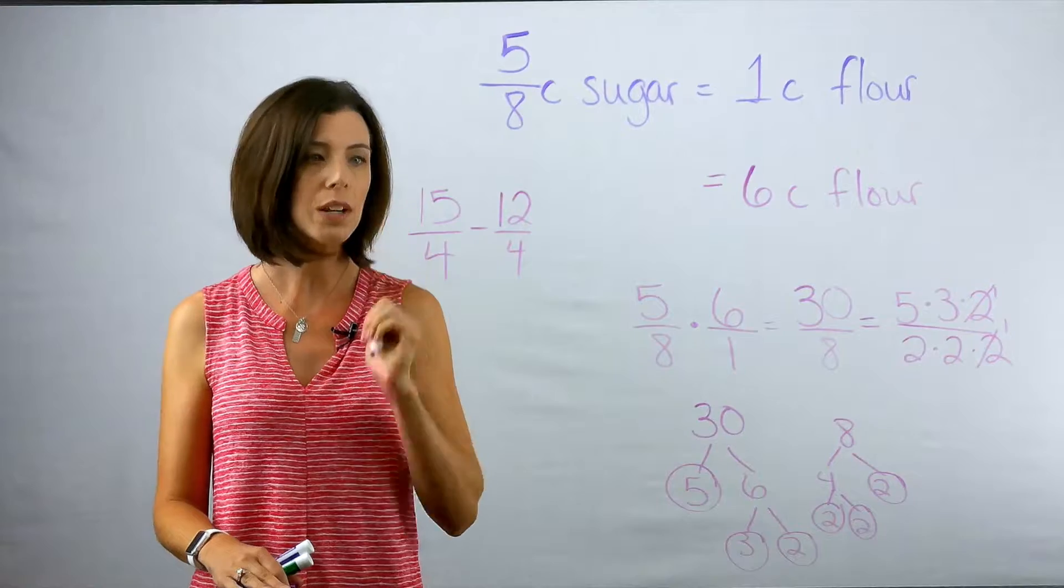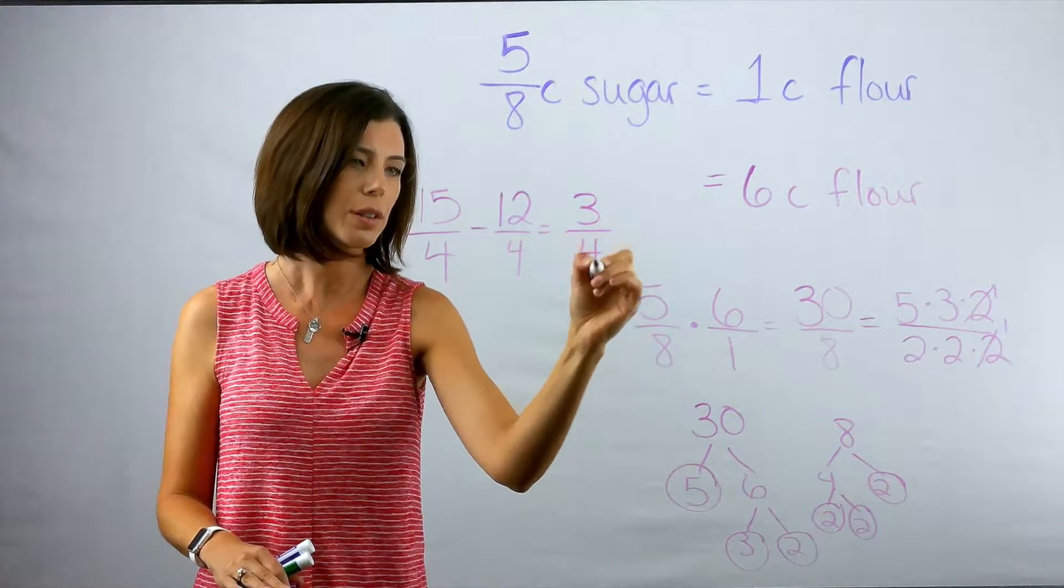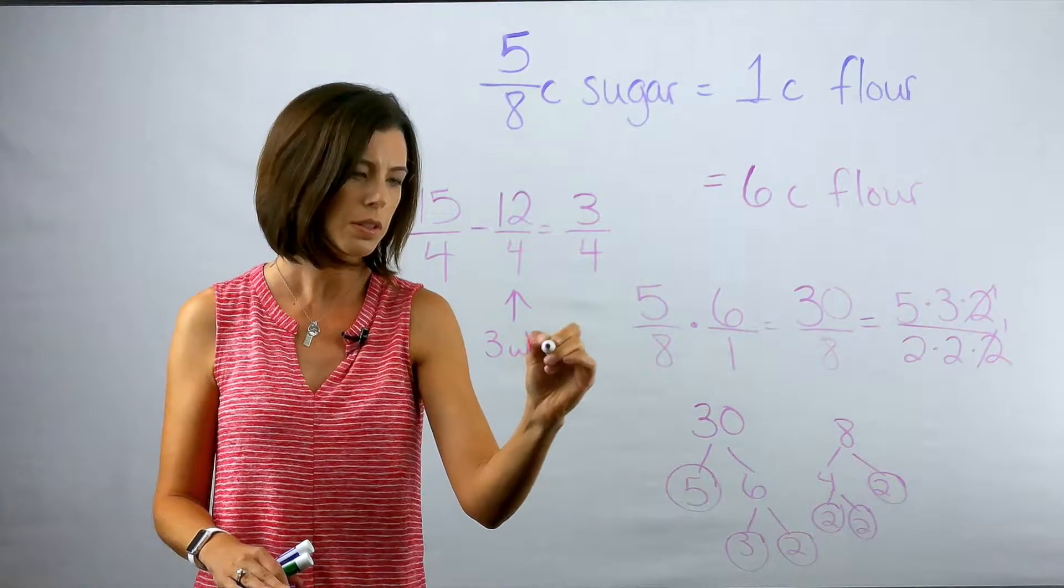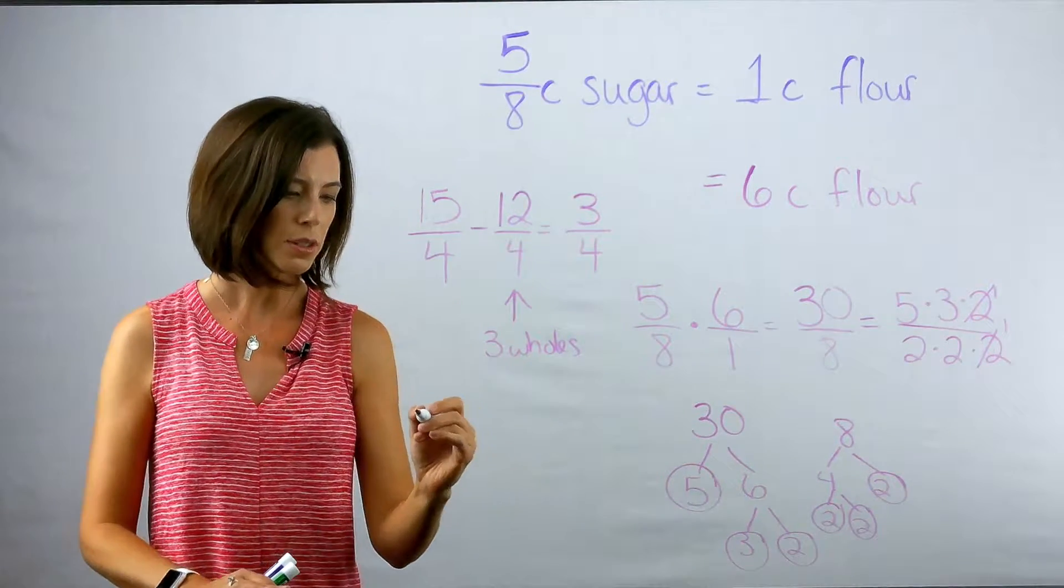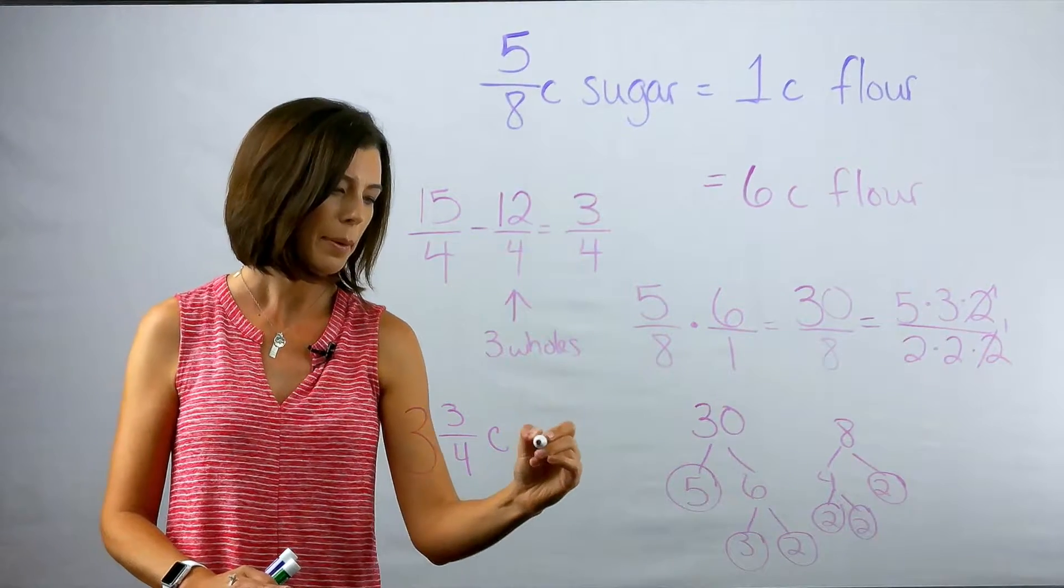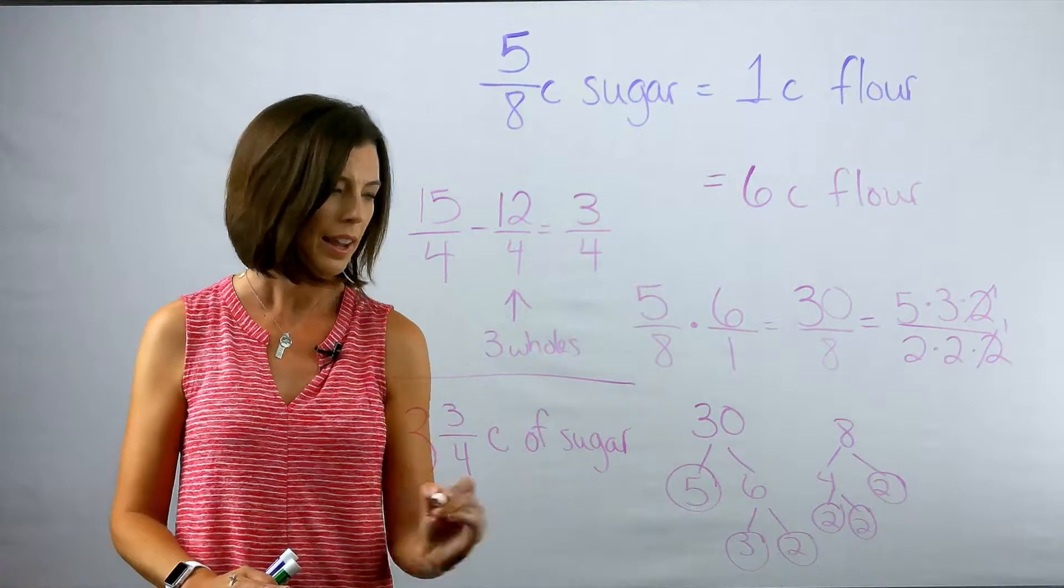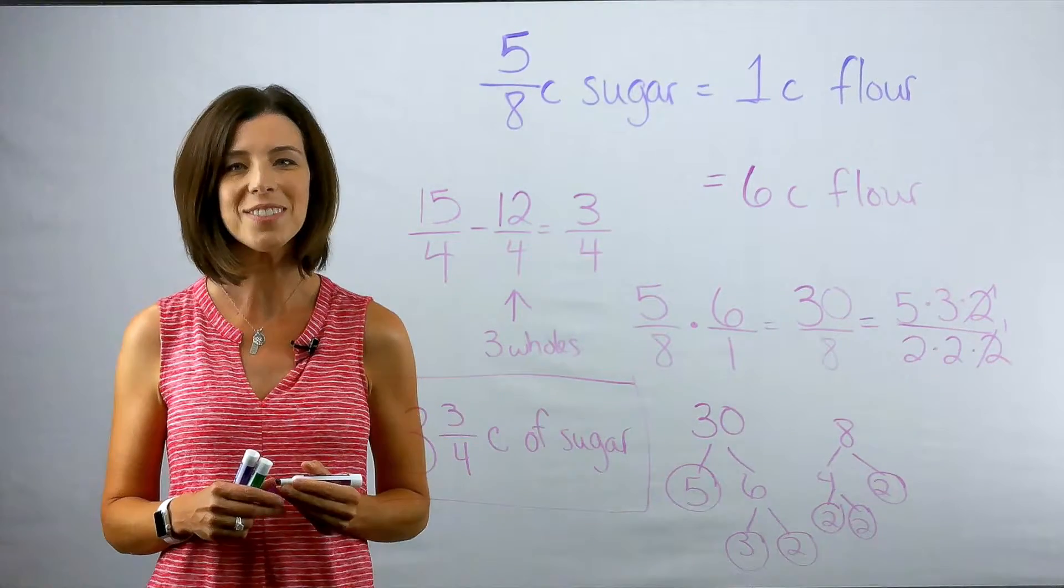So that's going to give me a leftover of three-fourths. And this is going to be three wholes. So my final answer is going to be three and three-fourths cup of sugar is what's going to be needed for my six cups of flour. I hope you found this video helpful.